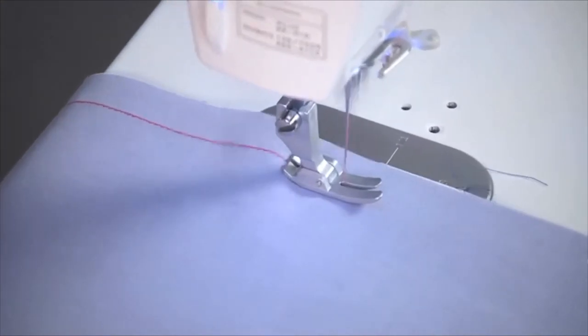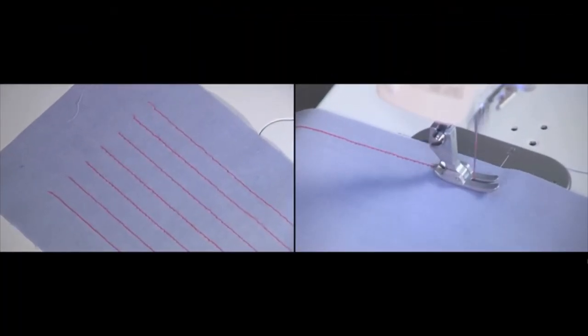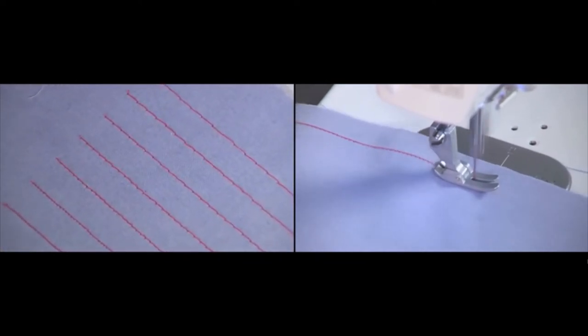Not only can this machine stitch fast up to 1500 stitches per minute, but it has a stitch length of up to 7mm for sewing and basting. Just look at that! What a beautiful stitch!